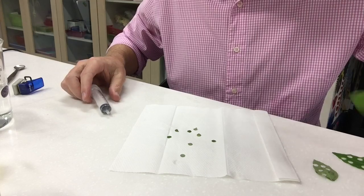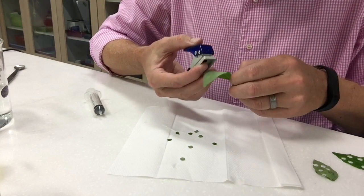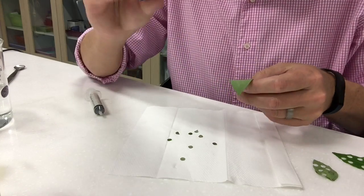And then of course you need leaves. Now I've gone ahead and punched out a number of discs already just using a hole puncher.